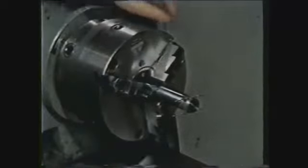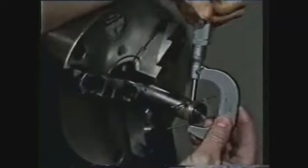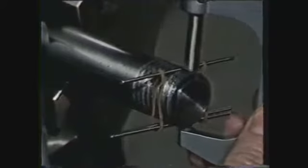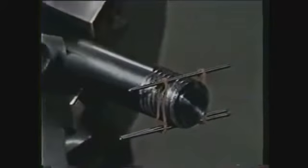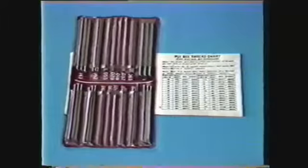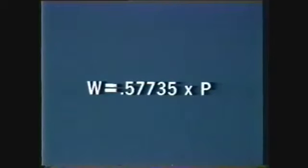One of the most accurate methods of measuring a screw thread is the three-wire method, which uses three wires of exact dimension and an ordinary outside micrometer. Maximum accuracy requires that the wires contact the pitch diameter of the thread, so the first step is determining the best wire size. This can be done by checking a table in the Machinery's Handbook, by using the manufacturer's chart, or by using the formula W equals 0.57735 divided by the number of threads per inch. The formula W equals 0.57735 times pitch will yield the same result.